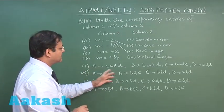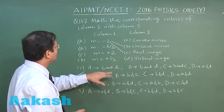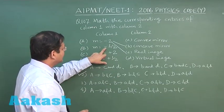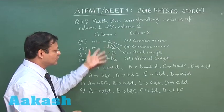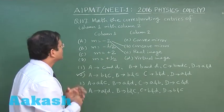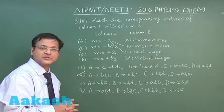Rest of things you can match whether it is matching properly or not, like B magnification negative means it will be real one, half magnification and so on. You will find that option 2 is the most appropriate option for question 107.